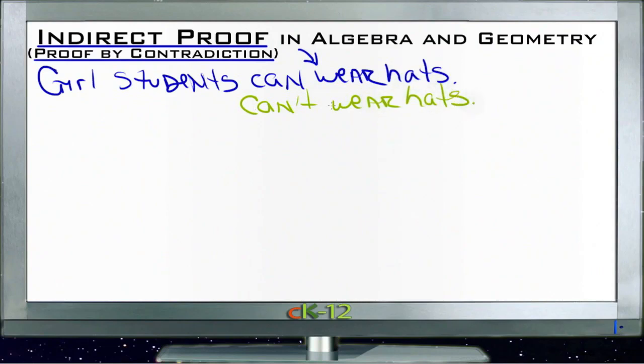Now we need to try and prove this and show that there's a contradiction. So if we assume that girl students can't wear hats and then discover that Amber wears a hat, for instance, then obviously there's a contradiction here. It can't be true that girl students can't wear hats because Amber's wearing a hat.